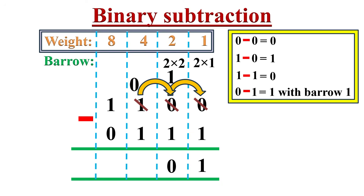Now moving to the 4's column, we again have 0 minus 1. Since 0 is lesser than 1, we borrow from the 8's column. In the 8's column, we replace the 1 with 0 and take that 1 to the 4's column, representing it as 2 times 4. Now in the 4's column we have two 4s. Subtracting 2 fours minus 1 four gives 1 as the answer. In the 8's column, we have 0 minus 0, which equals 0. So after subtraction, we got 0101 as the answer.